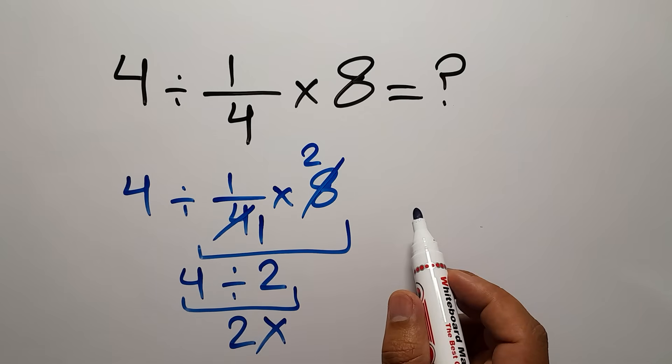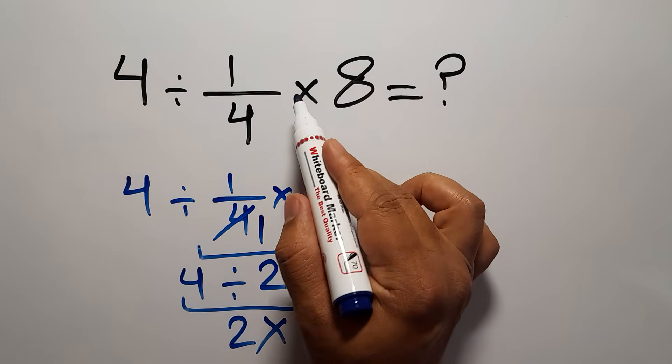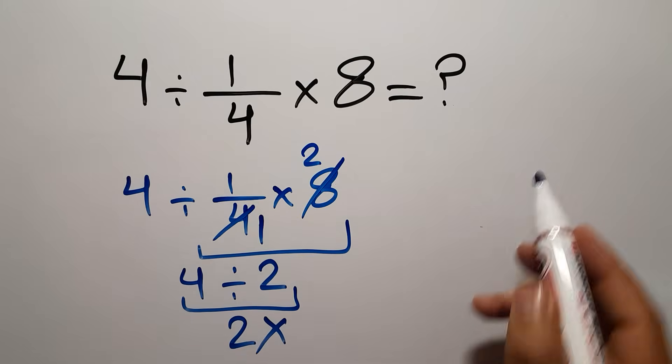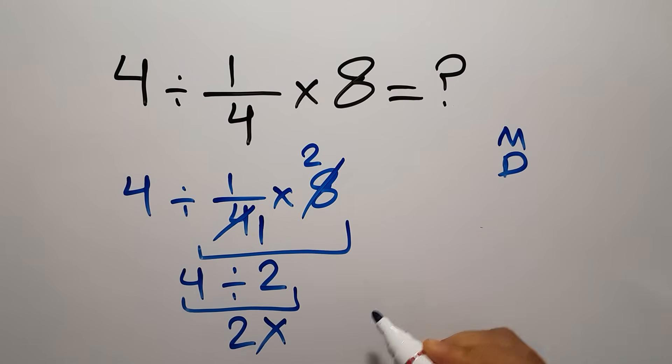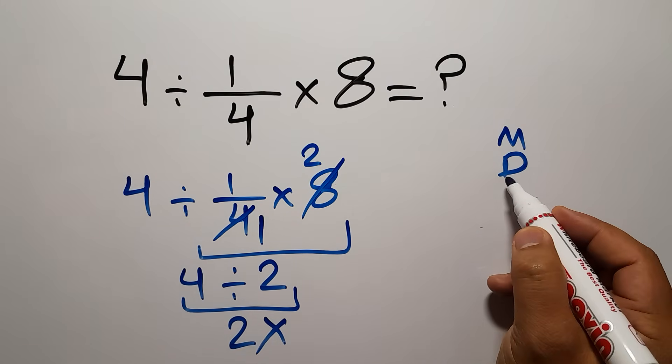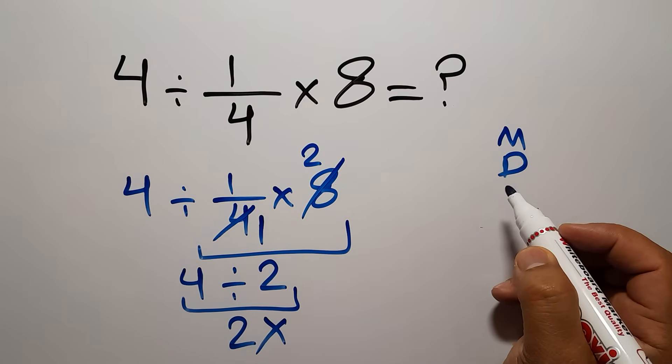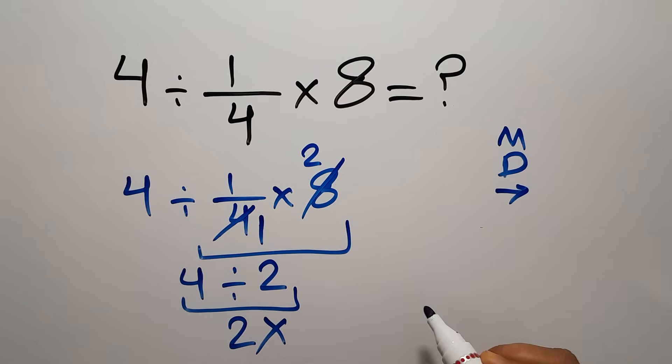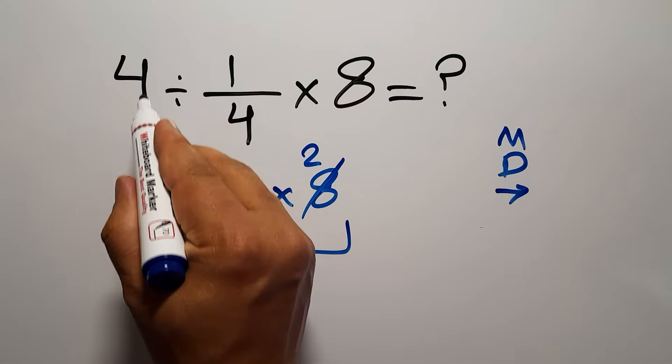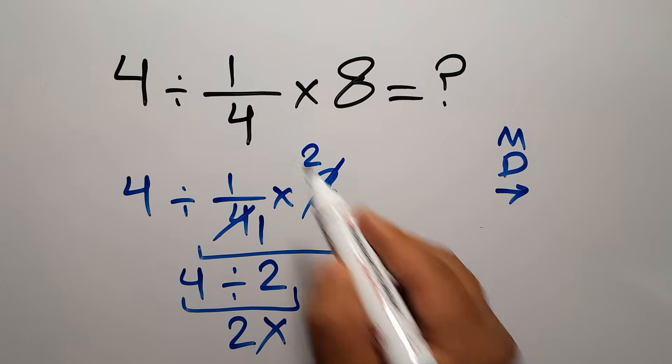Because according to the order of operations, which is PEMDAS, multiplication and division have equal priority and we have to work from left to right. So first we have to do this division, not this multiplication.